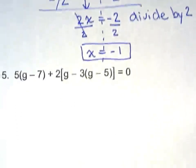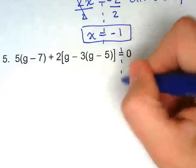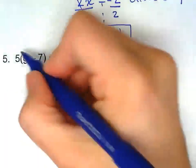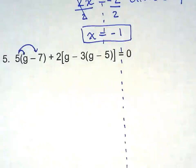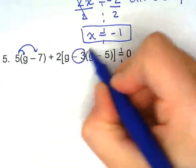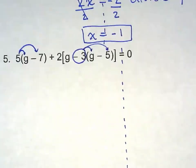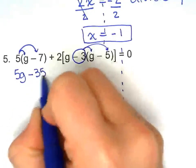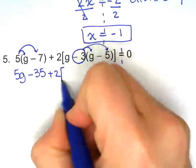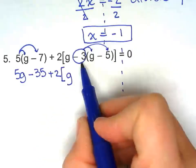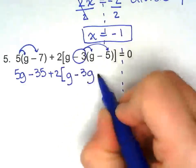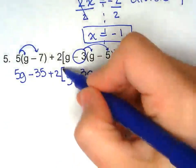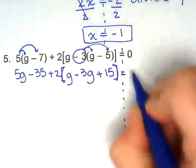Last one. So we're going to distribute this, the 5. We're going to wait for the 2. And we're going to distribute the negative 3 on the same step. So 5g minus 35 plus 2. Now we're going to distribute the negative 3. So negative 3g plus 15. We could have just used parenthesis right here. Instead of the brackets.